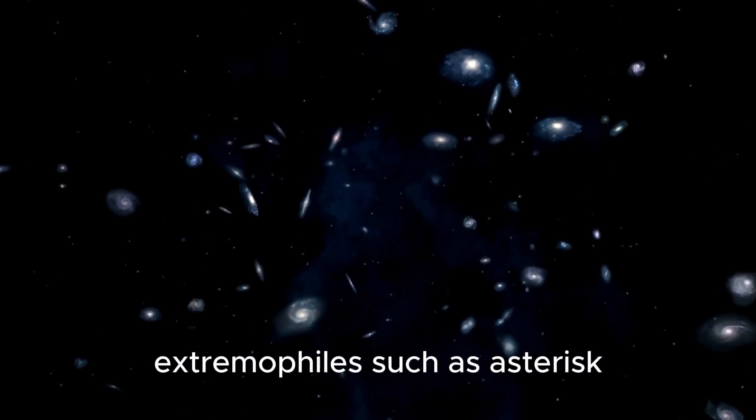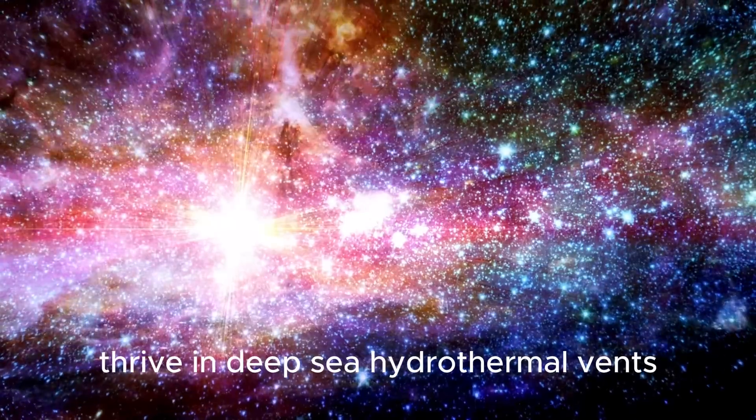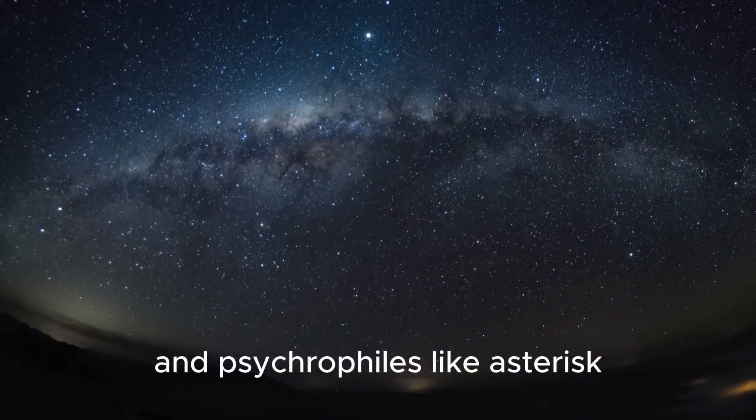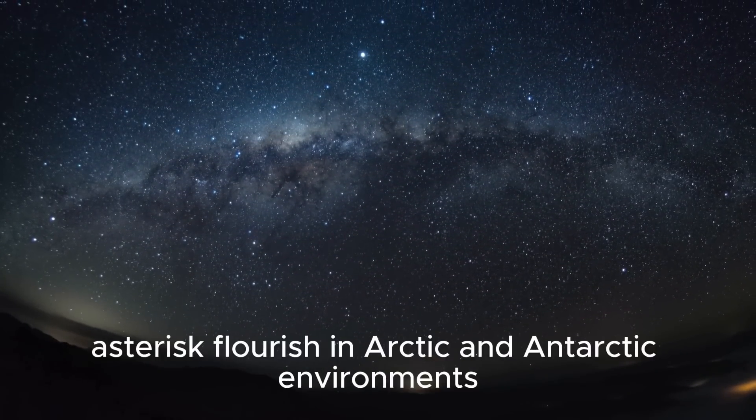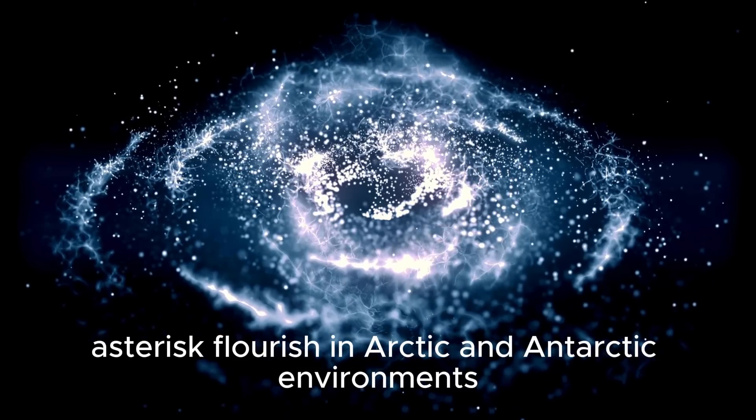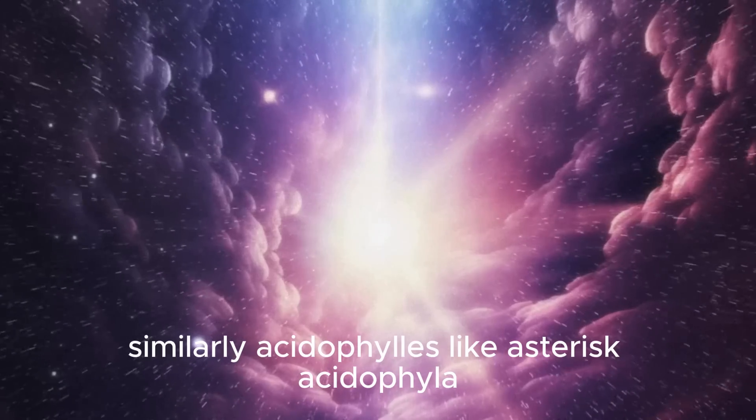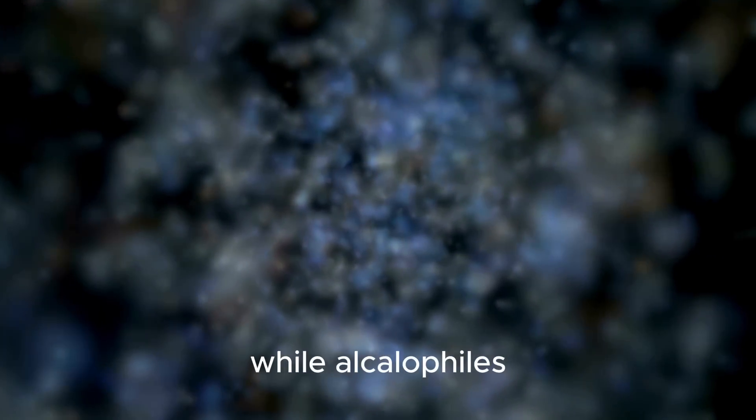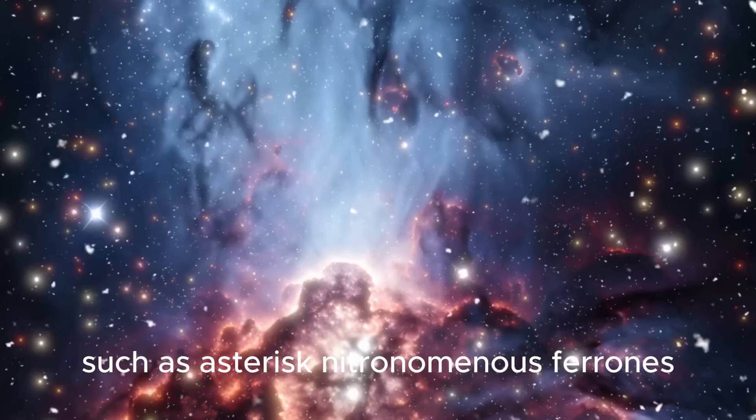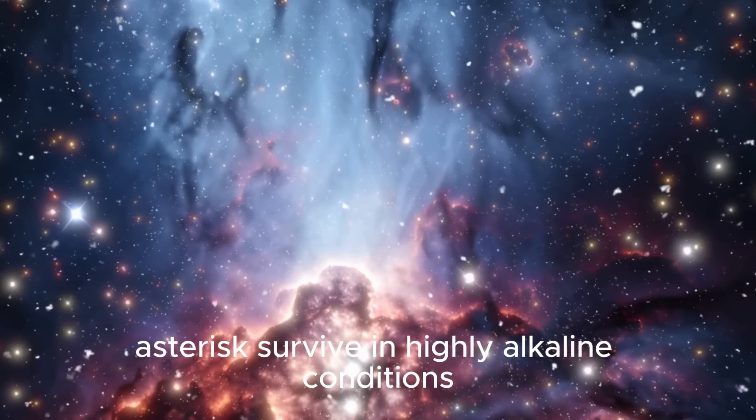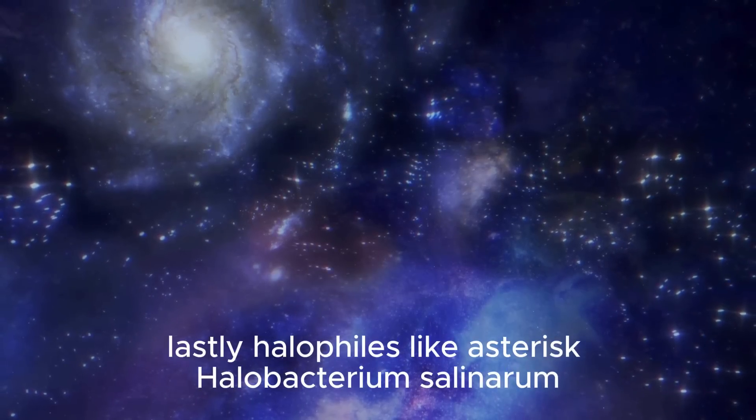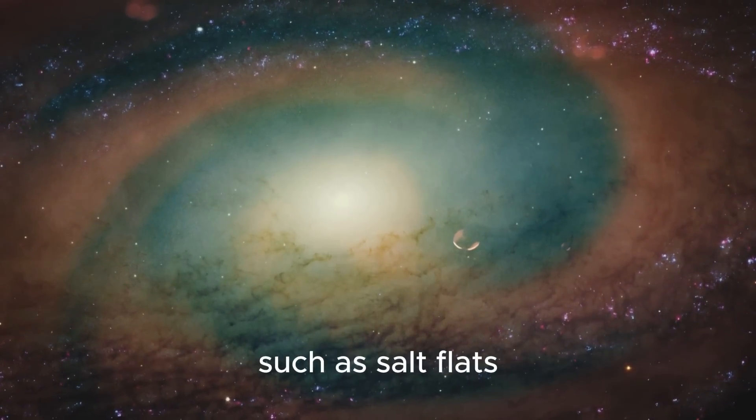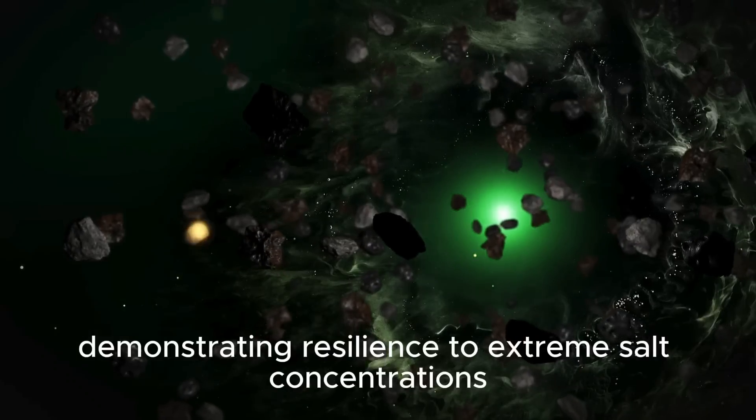On Earth, extremophiles such as Pyrococcus furiosus thrive in deep-sea hydrothermal vents where temperatures exceed 100 degrees Celsius, and psychrophiles like Psychrobacter arcticus flourish in Arctic and Antarctic environments. Similarly, acidophiles like Acidithiobacillus ferrooxidans thrive in highly acidic environments, while alkalophiles such as Natronomonas pharaonis survive in highly alkaline conditions. Lastly, halophiles like Halobacterium salinarum live in highly saline environments such as salt flats, demonstrating resilience to extreme salt concentrations.